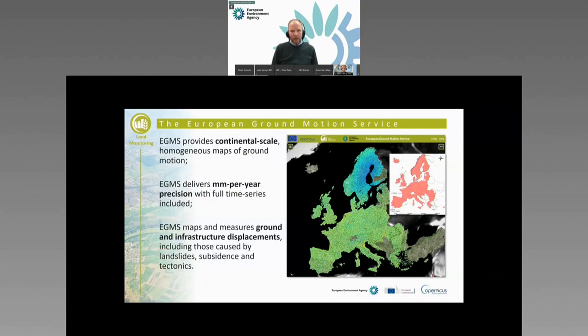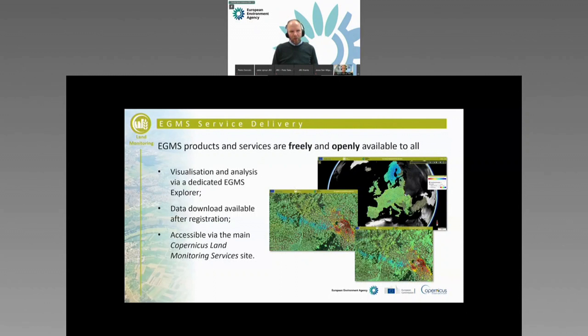Copernicus products, and this is also the case for EGMS, are freely and openly available to everybody. You can see these data in what we call the EGMS Explorer. You will be able to download the data quite soon — hopefully next week, in fact — and this will be possible according to plan. This service is actually part of what we call the Copernicus Land Monitoring Service, where you can find information about the service and get access to the viewer and hopefully next week to the archive.